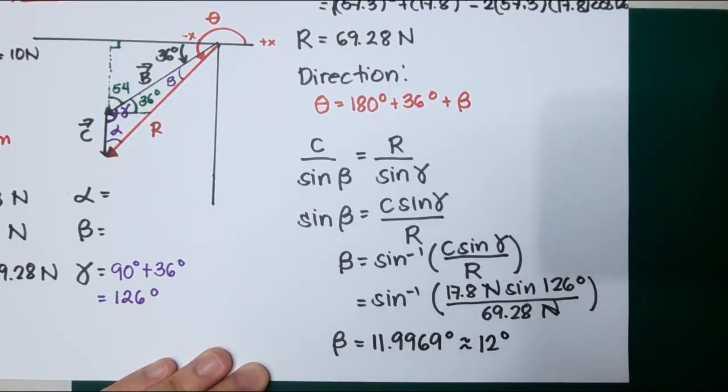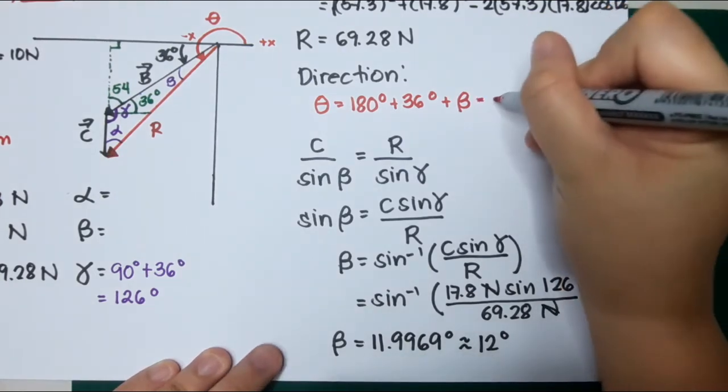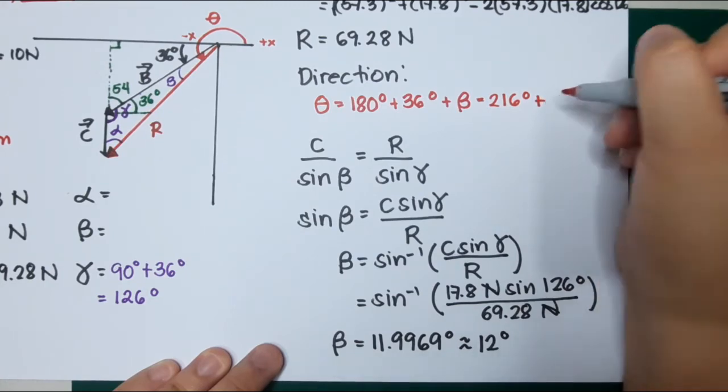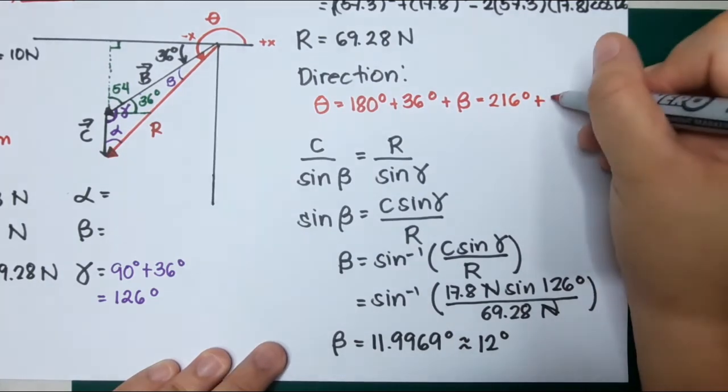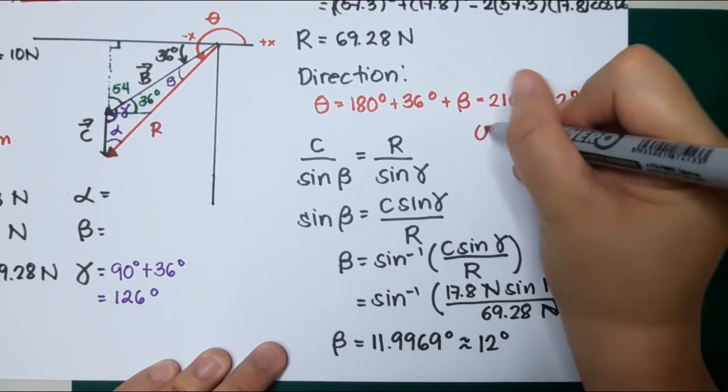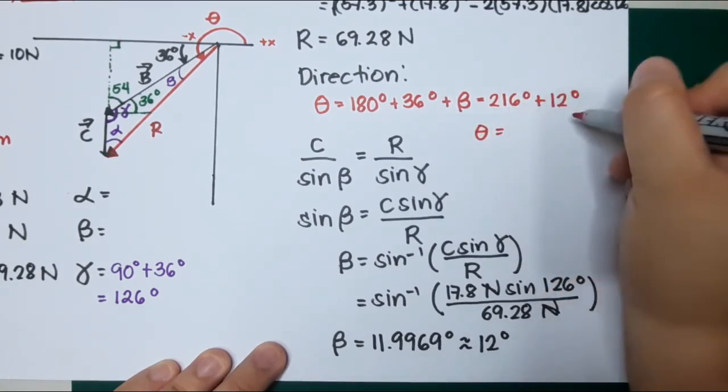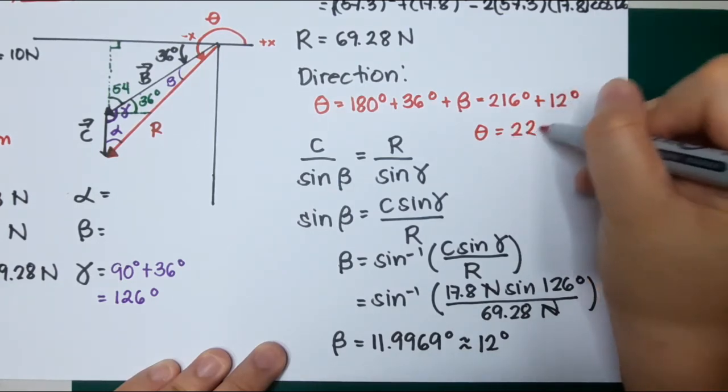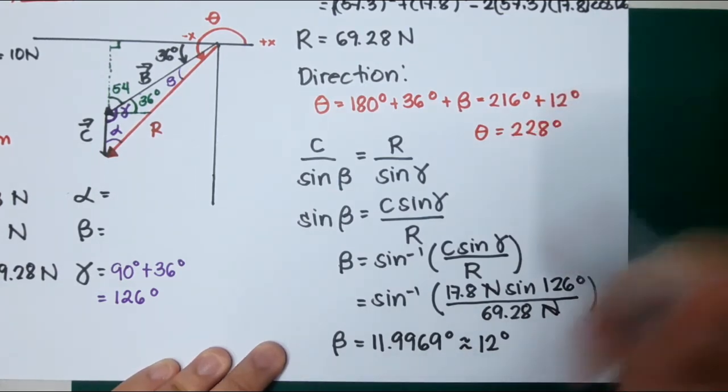If we will now substitute, so 180 plus 36, that is 216 degrees, plus what we have solved in beta, which is 12 degrees. So that is R theta now. The value of R theta is 228 degrees.